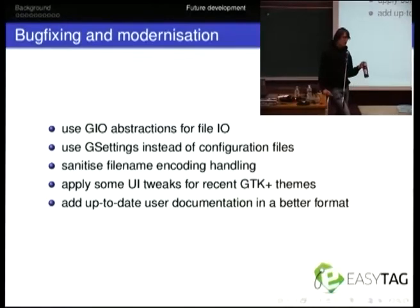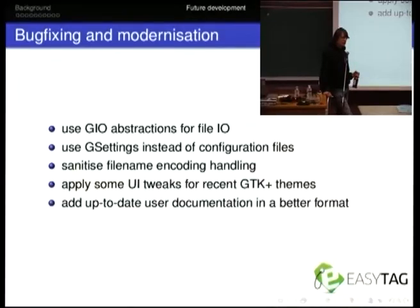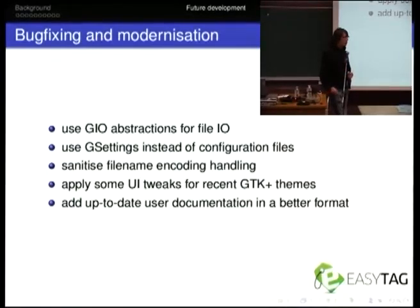It currently has its own custom configuration file format — because hey, that was cool back then — so we should change that. GLib, or GIO rather, now has GSettings, which on Windows would store all the configuration data in the registry. We should just use that. I've used it in a few other projects and it's going to simplify the code a lot and cut out a huge chunk of settings code.